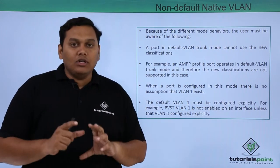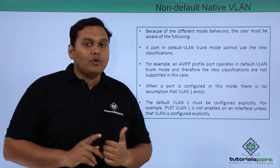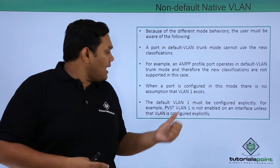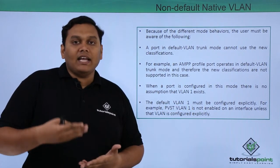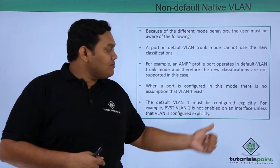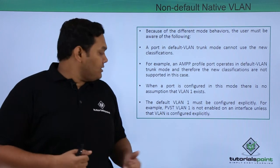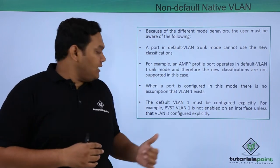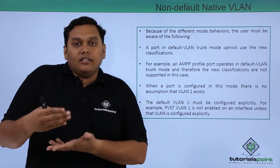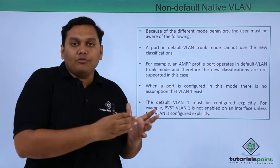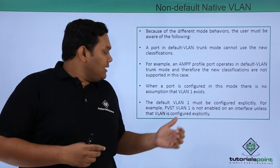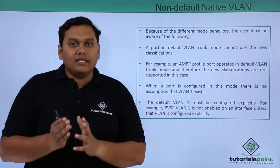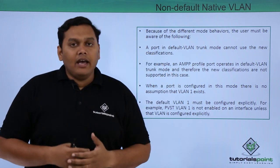When a port is configured in this non-default native VLAN mode, there is no assumption that VLAN 1 exists. The default VLAN must be configured explicitly. For example, TVST VLAN 1 should be enabled on the interface to configure this VLAN. That means if you want to create a default VLAN, the port should have TVST VLAN 1 enabled under this configuration.